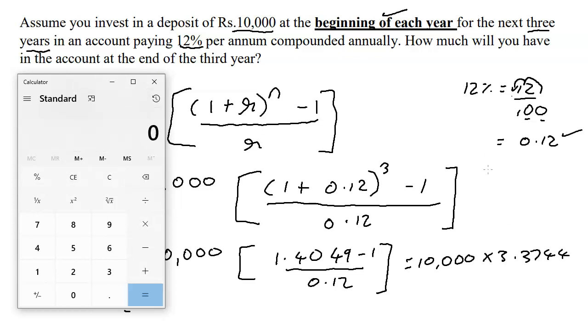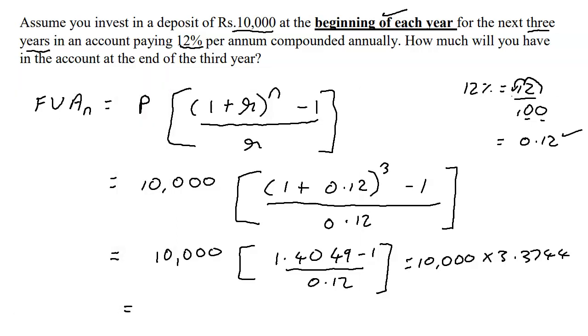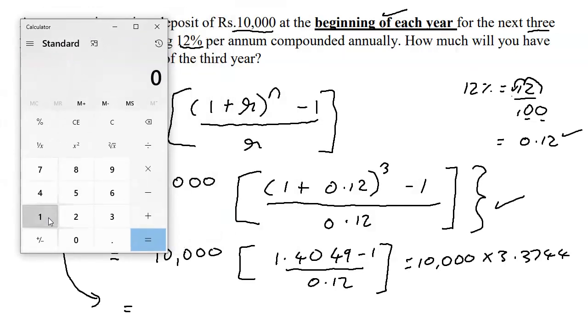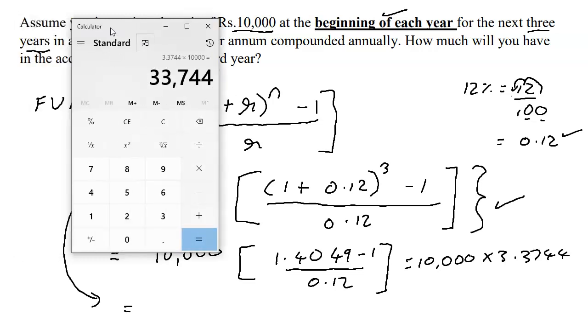I think now is a good time to show you how to do this entire calculation on the calculator. Simply show this substitution once and then directly get the answer. 1.12 into 1.12—this is square, this is cube—minus 1, divided by 0.12 gives us this. And thankfully there was nothing left which we could have missed. Into 10,000, which gives us 33,744.